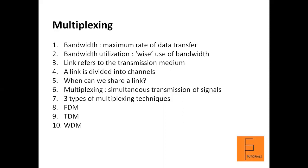Multiplexing is the set of techniques that allows the simultaneous transmission of multiple signals across a single data link. If the bandwidth of a link is greater than the bandwidth needs of the connected devices, the bandwidth is wasted. For instance, an optical fiber's bandwidth is fairly large, and using it for only one transmission wastes most of it. So it's better to go for multiplexing techniques.